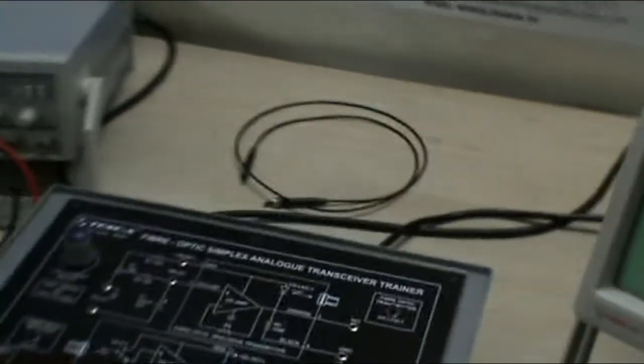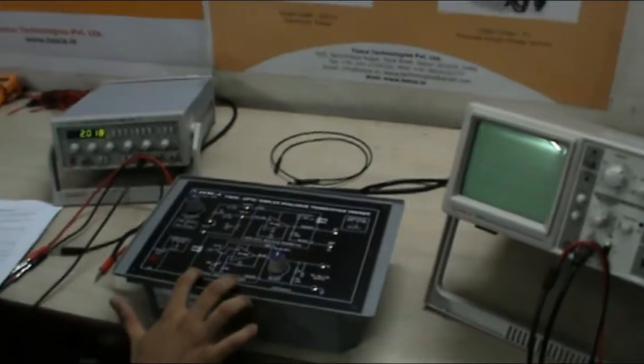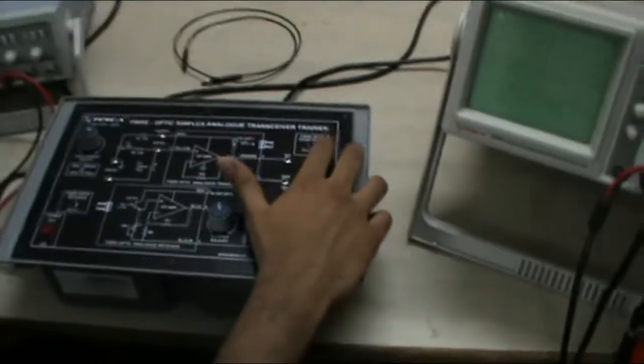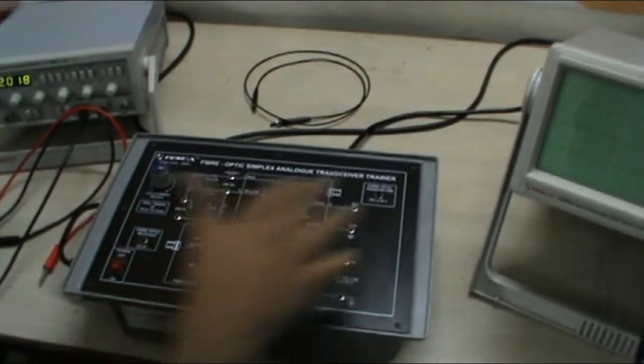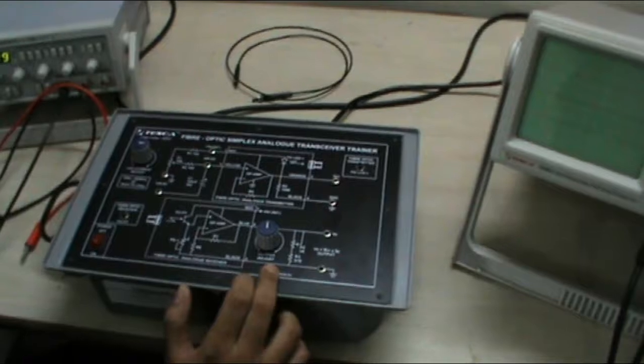Now this is our equipment. In this, this is the transmitter block and this is the receiver block. This is the LED current adjust and this is the Fiber Optic Transmitter FOLED and this is Fiber Optic Receiver through which we will connect the Fiber Optic Cable. This is the output adjust knob.